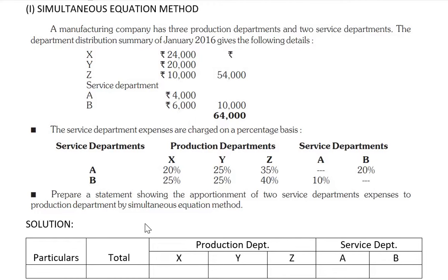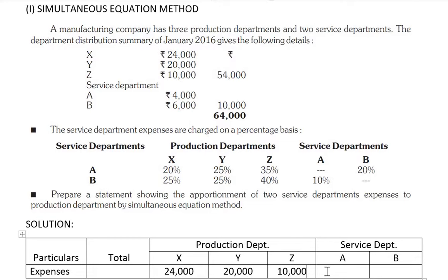Let's start the question. First of all, we write the expenses: for X it is 24,000; for Y it is 20,000; for Z it is 10,000; for service department A it is 4,000; and for service department B it is 6,000. If we total all of these it will be 64,000.